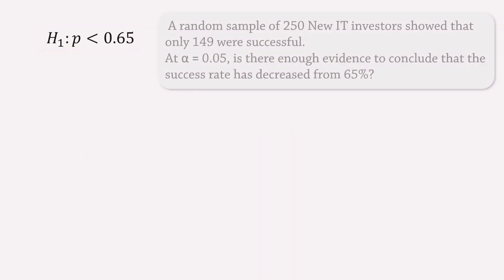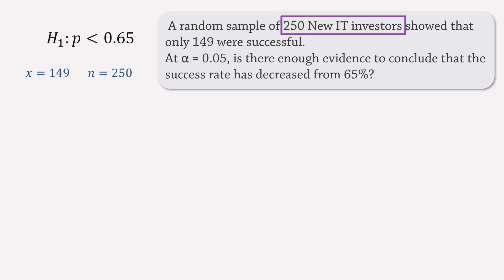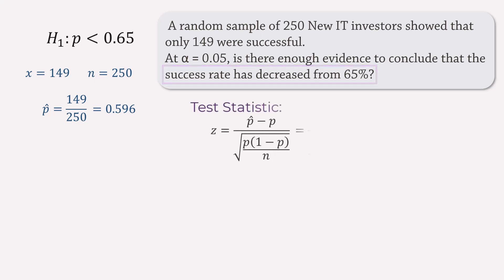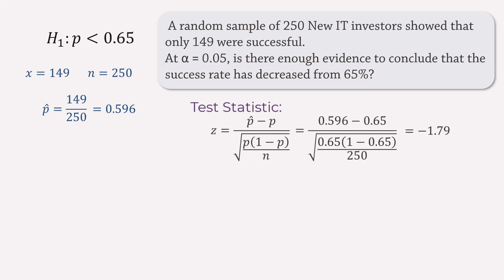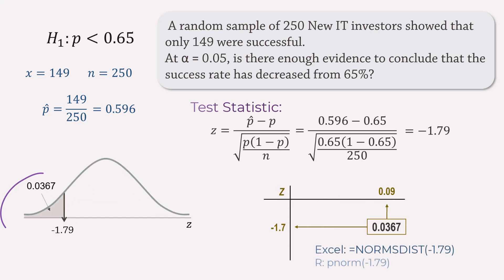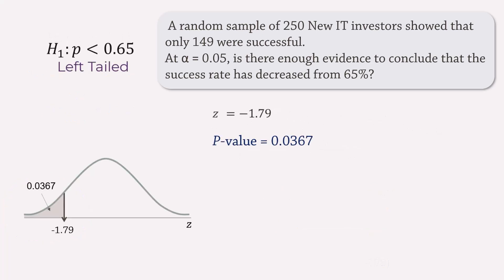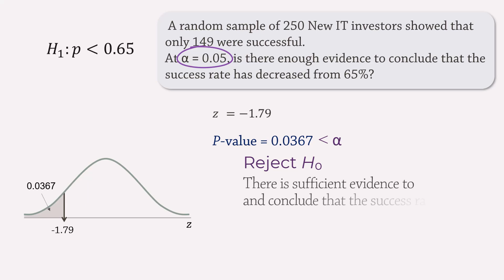A typical left-tailed test example could be the case with 149 successes out of 250, and we want to test if the success rate has decreased from 65%. The sample proportion is now 0.596. Plugging in the values, the test statistic is negative 1.79 and the less-than area is found to be 0.0367. Since this is a left-tailed test, the p-value is 0.0367, which is less than the specified alpha of 0.05. As a result, we reject the null hypothesis and conclude that the success rate has decreased.